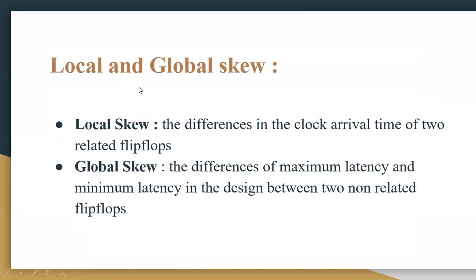Now we will discuss about local and global skew. Local skew is nothing but the difference in the clock arrival time of two related flip-flops. Global skew is the difference of maximum latency and minimum latency in the design between two non-related flip-flops. That is the basic difference between local and global skew.